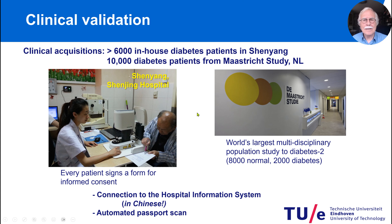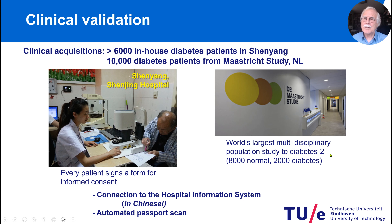We had the clinical validation in Shenyang with 6,000 in-house patients. We also had patients from the Maastricht study in the Netherlands, which is the world's largest multidisciplinary population study on diabetes. They look at 10,000 people — 8,000 normal and 2,000 with diabetes — who get a full investigation including ophthalmology, MRI scans, even bone densitometry scans. They come for one and a half days and are fully investigated. We had full access to the ophthalmology data for this diabetes cross-correlation study, which was really fantastic.